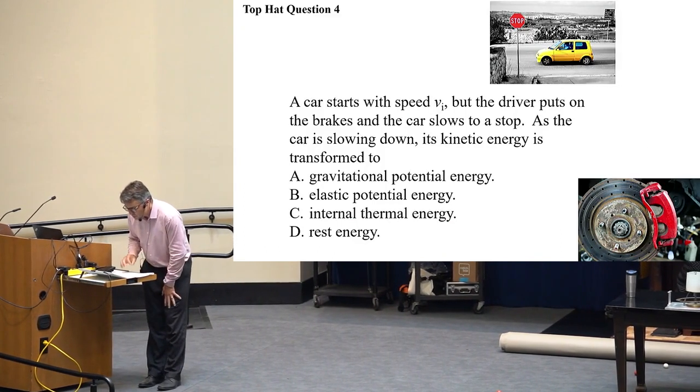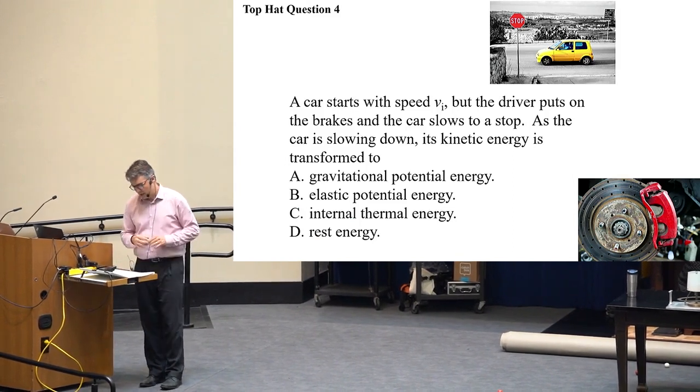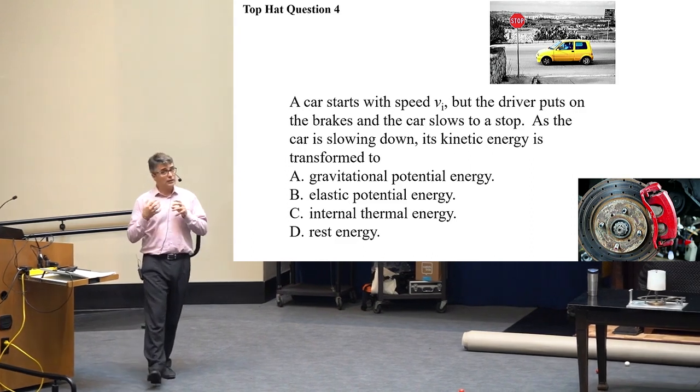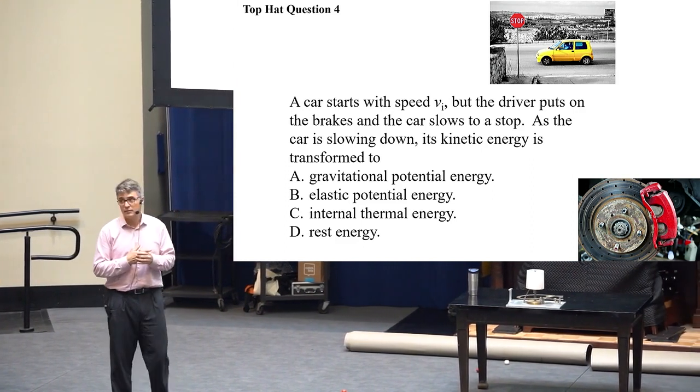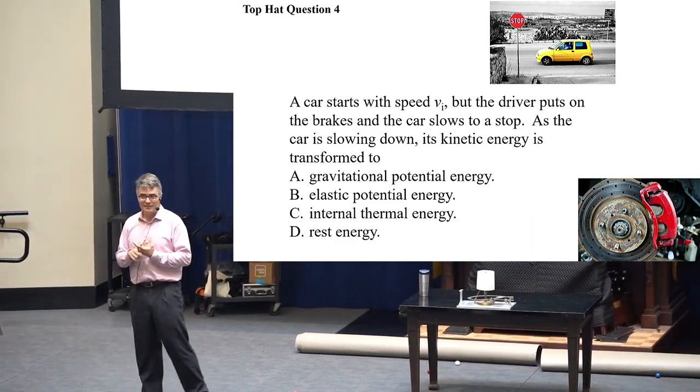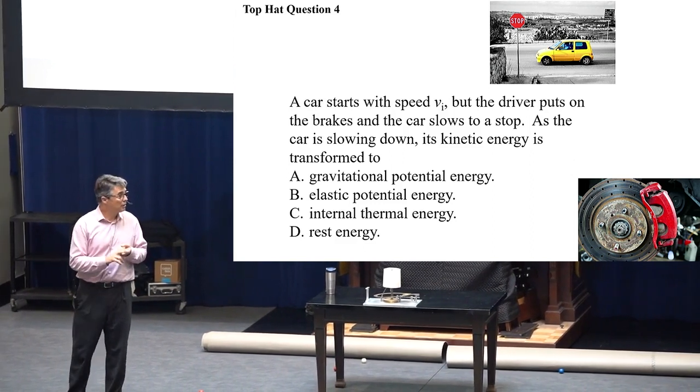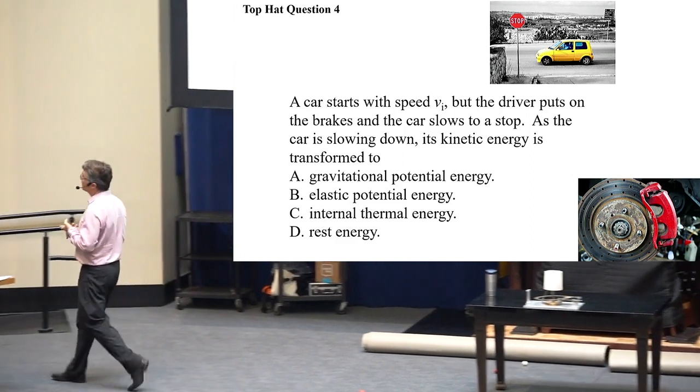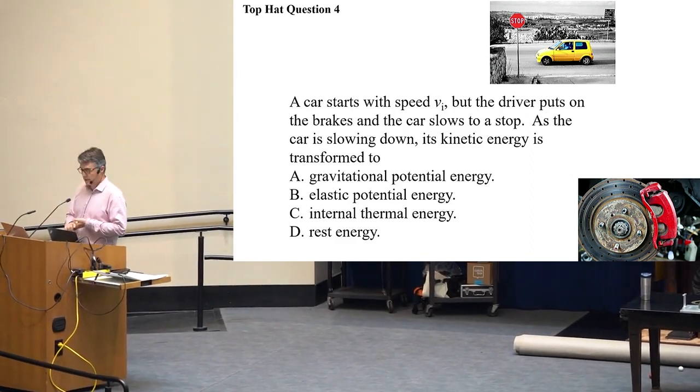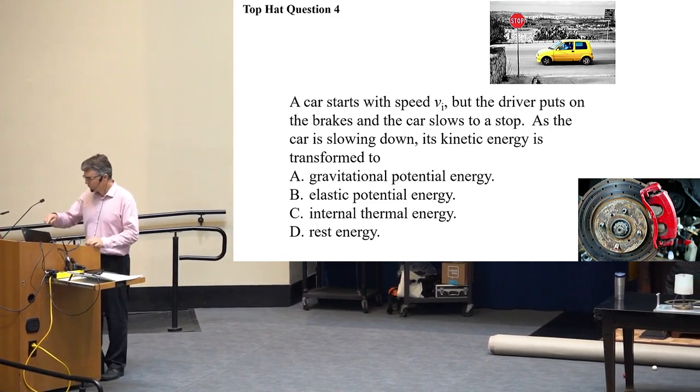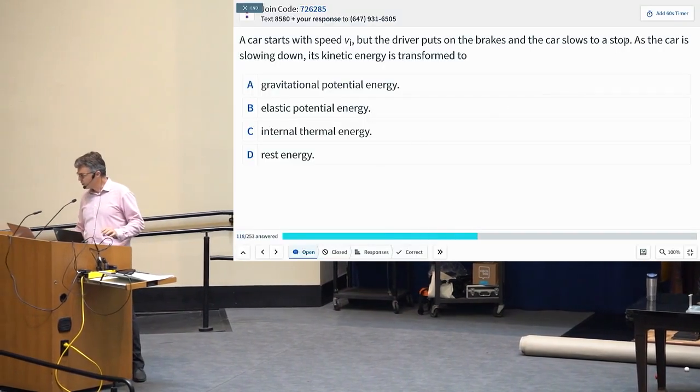Let's do another top hat question. A car starts with some speed V_i, but the driver puts on the brakes, and the car slows to a stop. As the car is slowing down, that initial kinetic energy must be getting transformed into something else. So maybe give me the main other form of energy that it's getting transformed into. Is it A, gravitational, B, elastic potential energy, C, internal thermal energy, or D, rest energy? Think, pair, share, please.